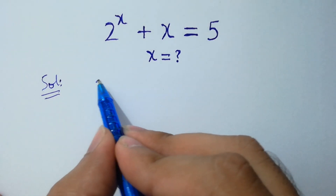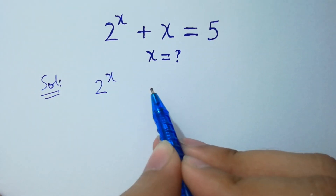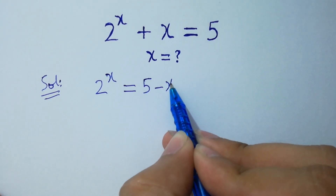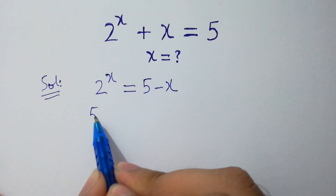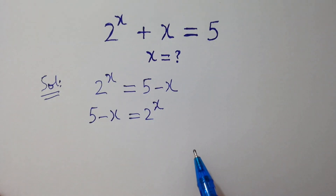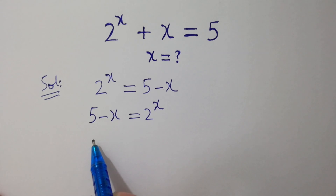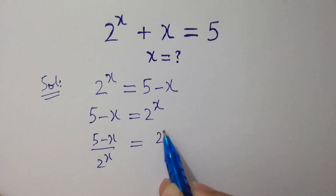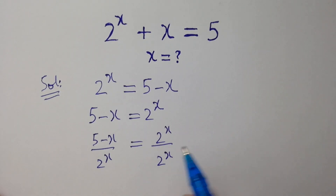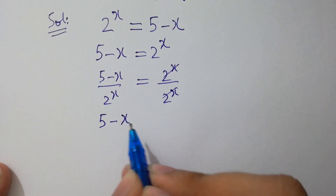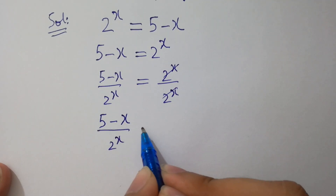2 to the power x will be equal to 5 minus x, and 5 minus x will be equal to 2 to the power x — both are absolutely the same. Dividing by 2 to the power x on both sides, the 2^x terms cancel, and we get: (5 minus x) over 2 to the power x equals 1.